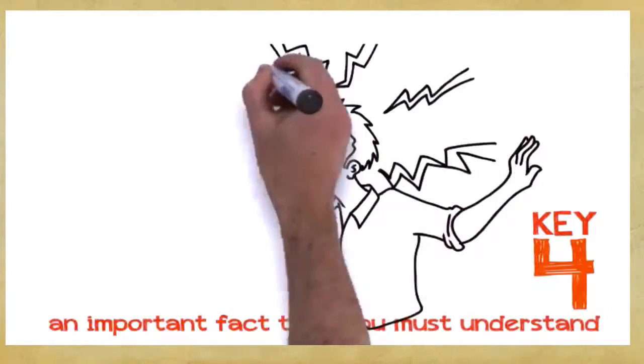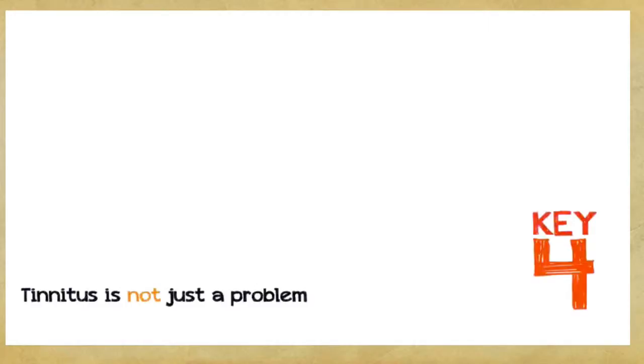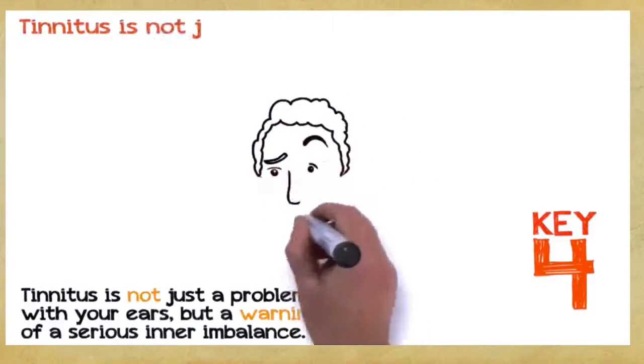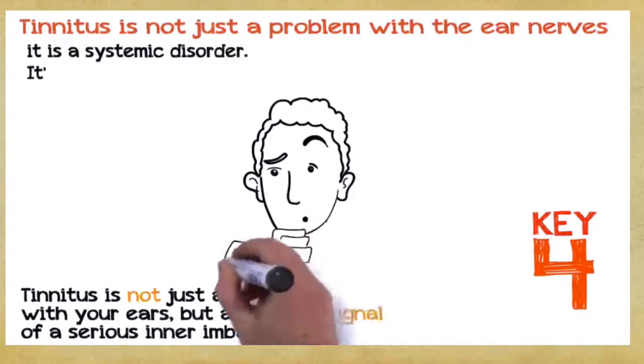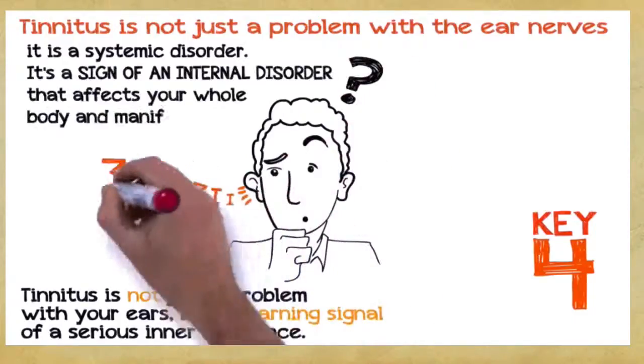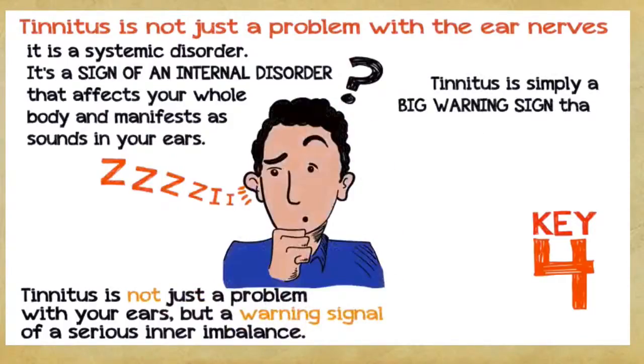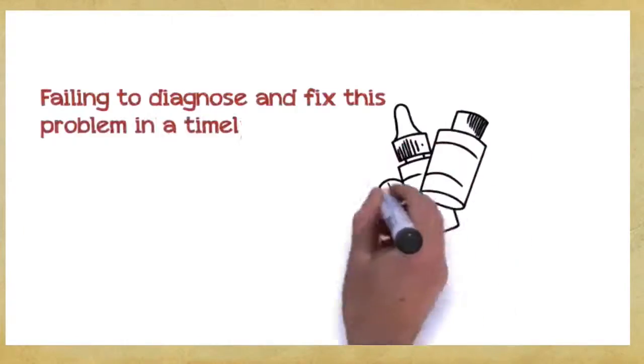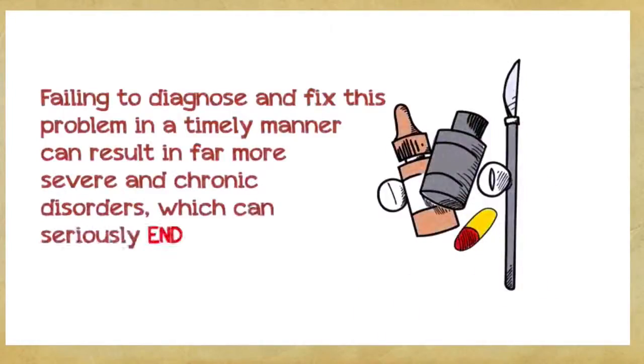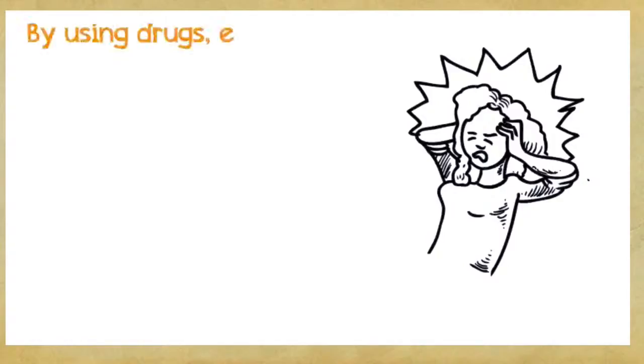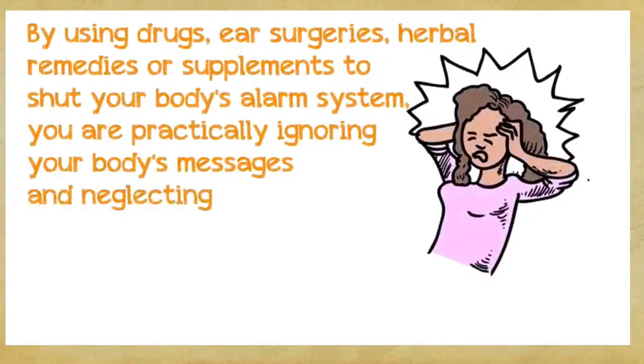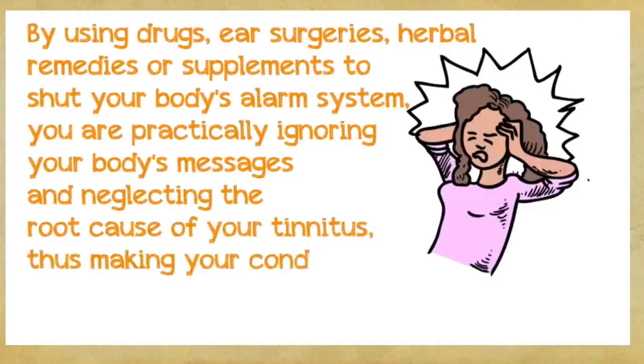Key number four: This is a very important fact that you absolutely must understand if you want to save hundreds or even thousands of dollars. Tinnitus is not just a problem with your ears, but a warning signal of a serious inner imbalance. In the vast majority of cases, tinnitus is not just a problem with the ear nerves, it's a systemic disorder. It's a sign of an internal disorder that affects your whole body and manifests as sounds in your ears. Tinnitus is simply a big warning sign that something inside your system is wrong and needs to be corrected. Failing to diagnose and fix this problem in a timely manner can result in a far more severe and chronic disorder, which can seriously endanger your health. By using drugs, ear surgeries, herbal remedies, or supplements to shut your body's alarm system, you're practically ignoring your body's messages and neglecting the root cause of your tinnitus, thus making your condition worse in the long run.